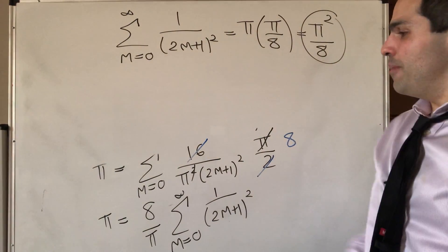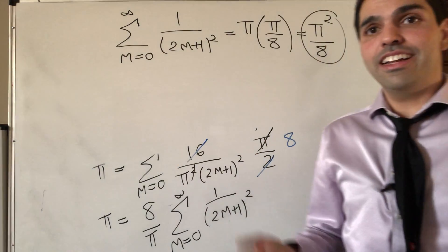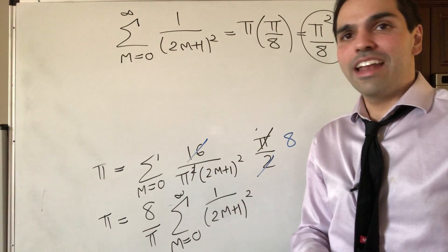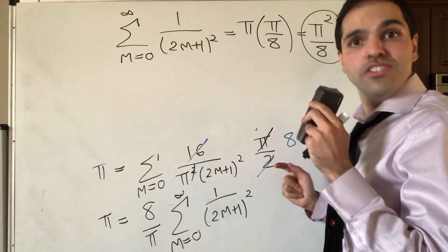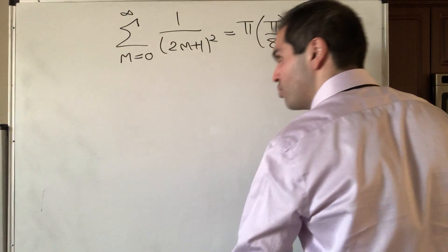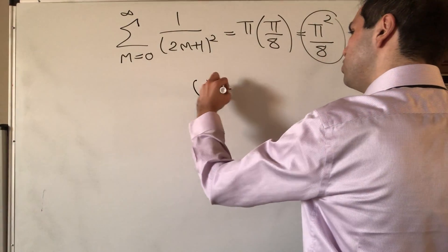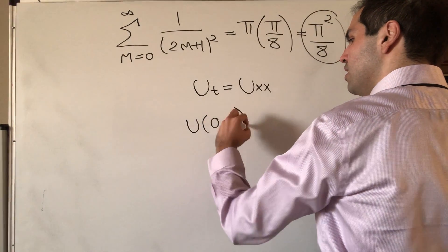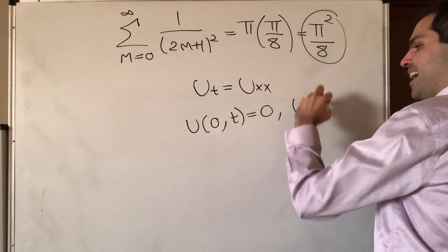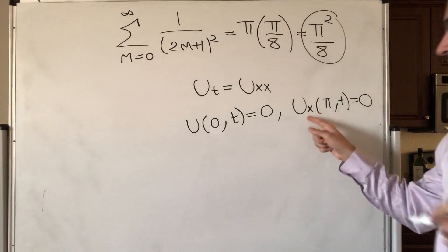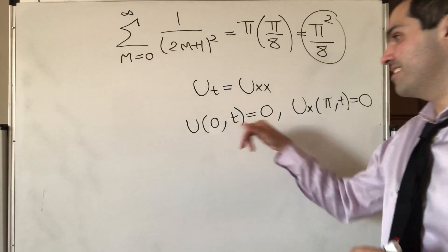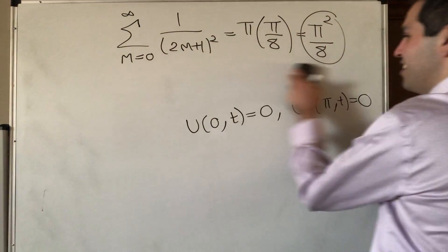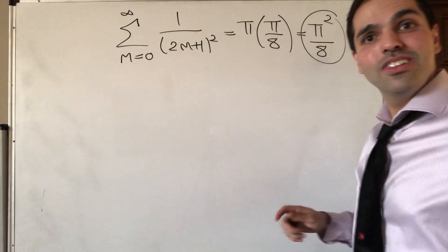Before moving on to the other method, it's worth noting that cosines of odd multiples of 1/2 do appear in nature. For instance, if you're solving the heat equation u_t = u_xx with mixed boundary conditions — say u(0,t) = 0 and u_x(π,t) = 0 — that's mixed Dirichlet-Neumann boundary conditions, and that's actually where these cosines magically appear. My PDE students were not that excited about this, but still.